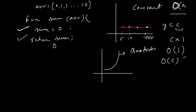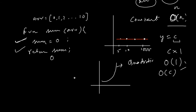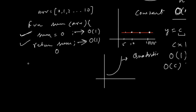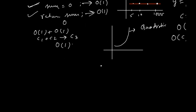We have a function that takes an input array, initializes sum, and returns the sum. Declaring a variable needs no time and has nothing to do with the input, so it takes constant time — O(1). Returning the sum also has nothing to do with the input array, so it takes O(1). Summing O(1) + O(1) is still a constant — c1 + c2 = c3 — so O(1) is still the complexity of this whole function.